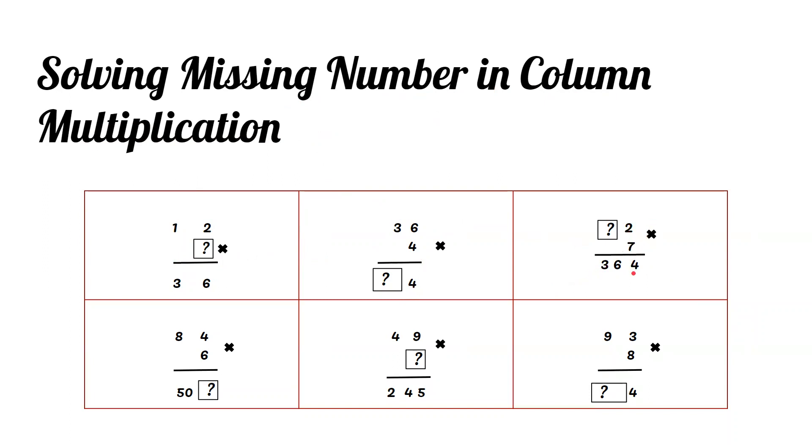7 times 2 equals 14, 4 in the ones place, 1 on top of the tens place. Since we have a 1 on top of the tens place, we'll be minus 1.